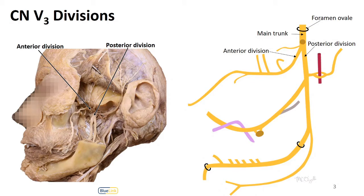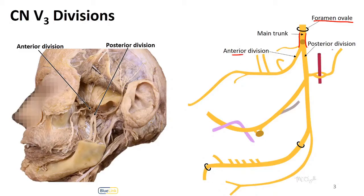V3 exits the skull through the foramen ovale, and it exits then into the infratemporal fossa. There, you see a short trunk, as well as an anterior and a posterior division.